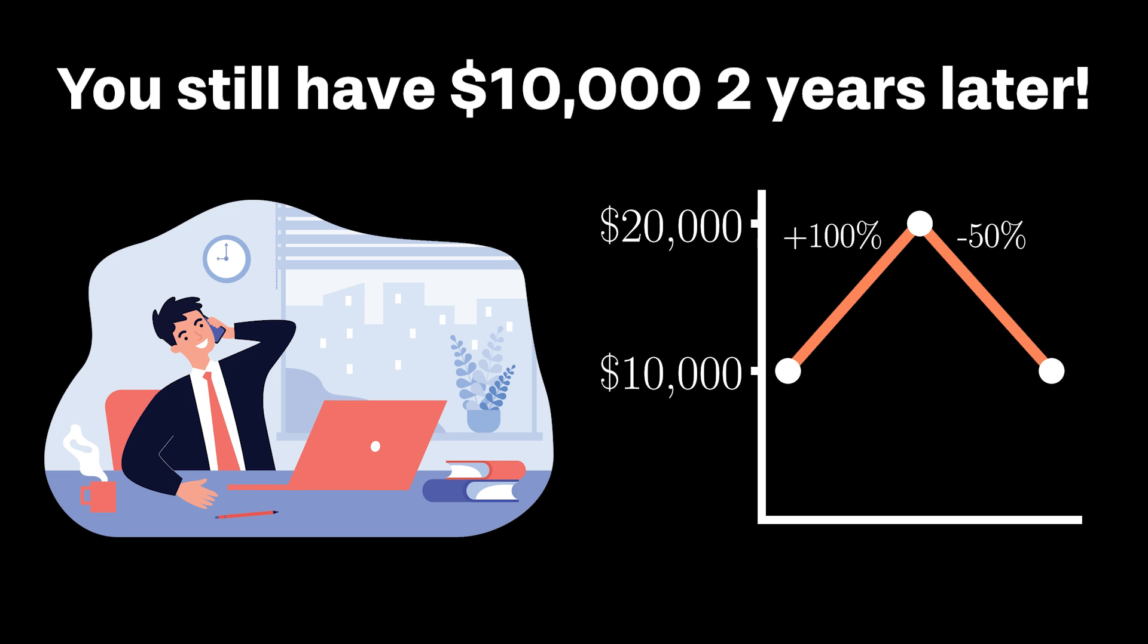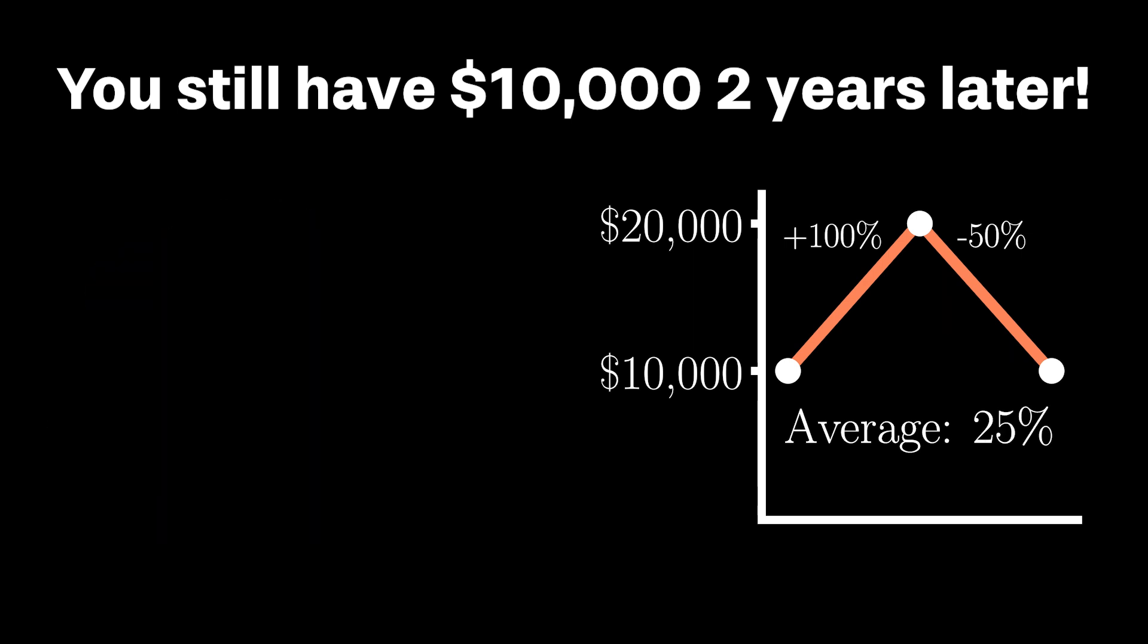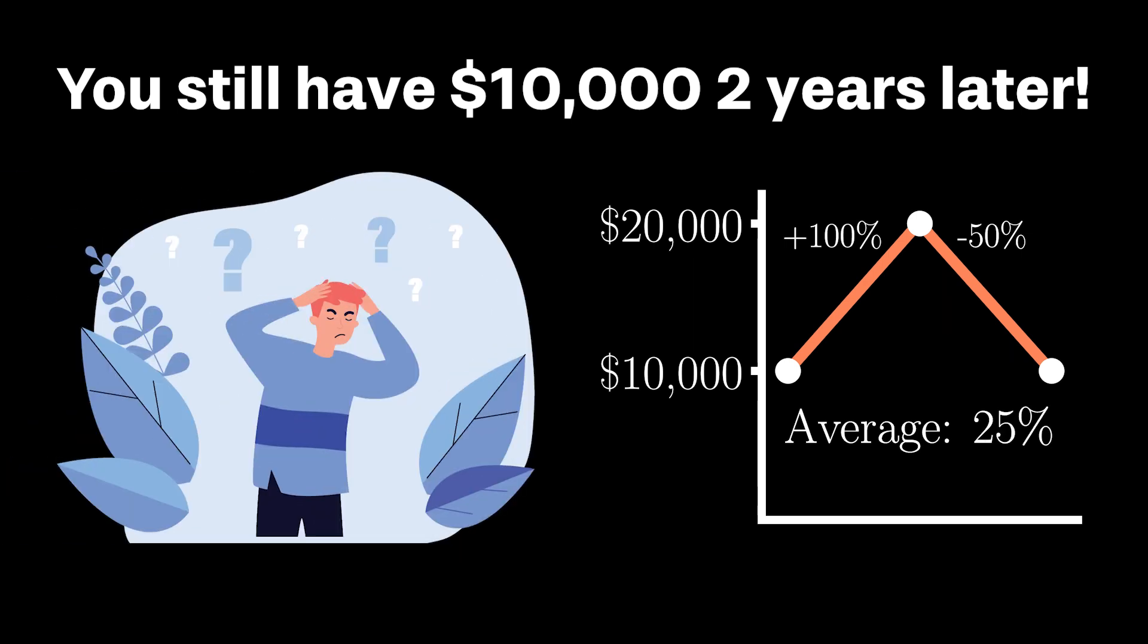And of course, the average of 100% and minus 50% is simply 25%. On the surface, Frank seems right. But is he really right? Something about his answer seems deceitful at best.